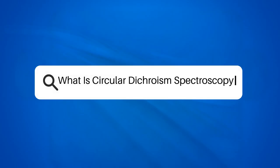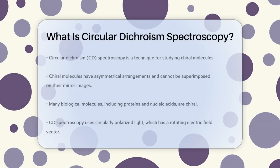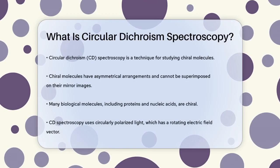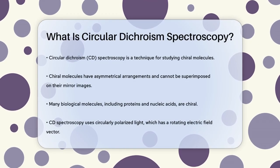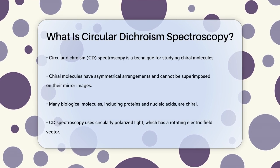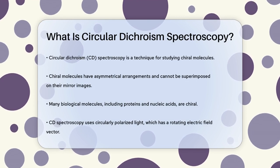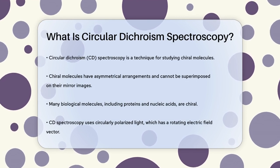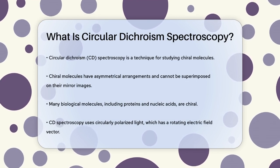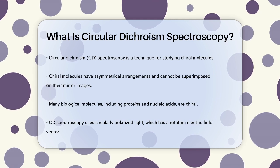What is circular dichroism spectroscopy? Have you ever wondered how scientists figure out the intricate structures of molecules, especially those that are mirror images of each other but not superimposable? This is where circular dichroism spectroscopy comes in.